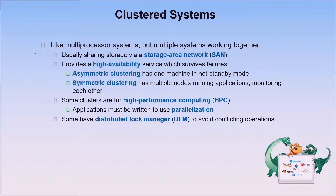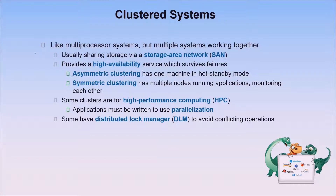There are two types of clustered systems: asymmetric clustering has one machine in hot standby mode, while symmetric clustering has multiple nodes running applications and monitoring each other. Some clusters are for high-performance computing (HPC) — applications must be written to use parallelization. Some clusters have a distributed lock manager (DLM) to avoid conflicting operations.